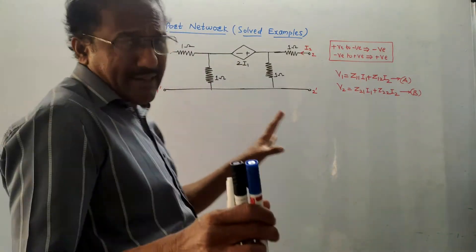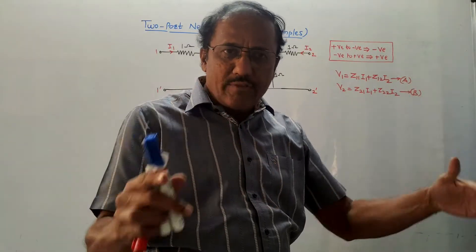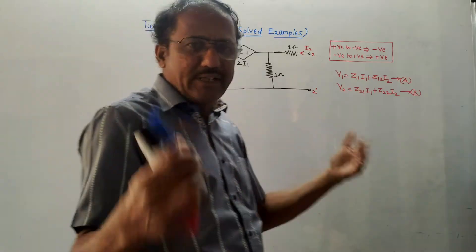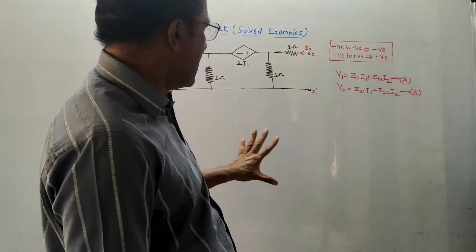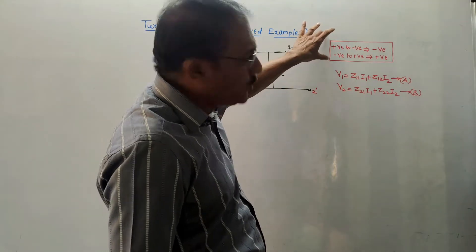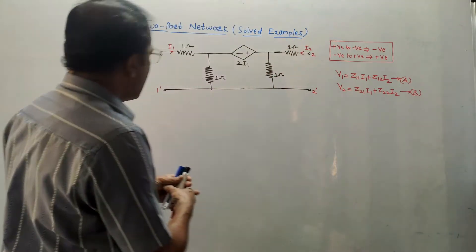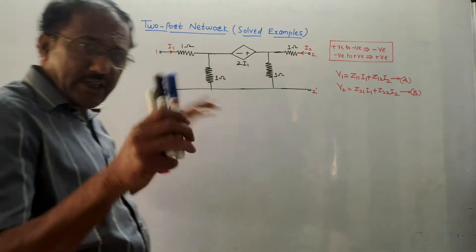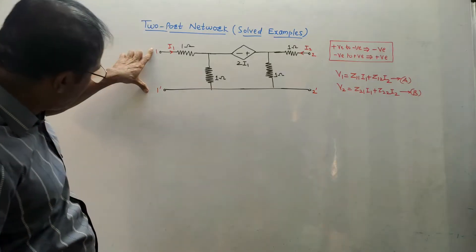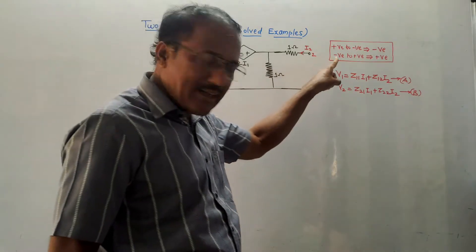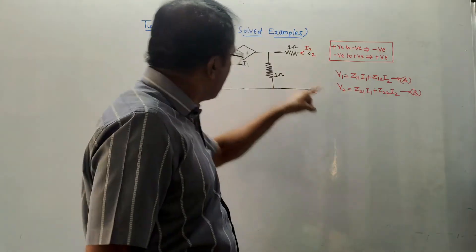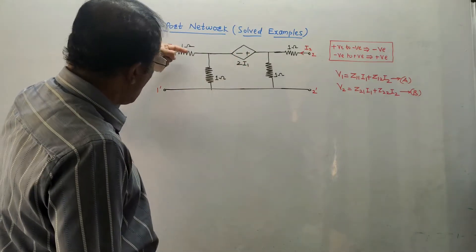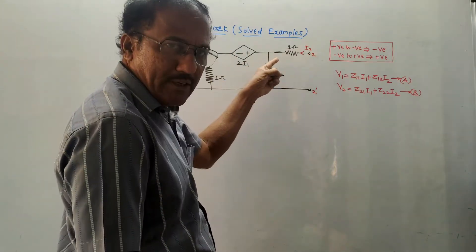Do remember the basic things. For Z parameters, always apply KVL. It doesn't mean this is the only way to solve numericals on Z parameters, but it is the simplest technique. For KVL, we will be using two simple rules. The notations are already given in the question. Input terminals are denoted by 1, 1-dash; output terminals are denoted by 2, 2-dash. The directions of currents I1 and I2 are fixed — I1 moves inside, I2 also moves towards the network.